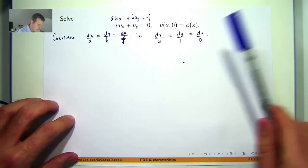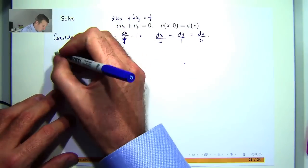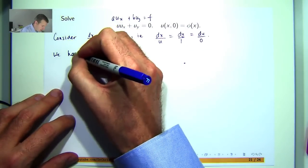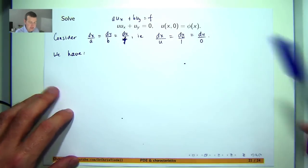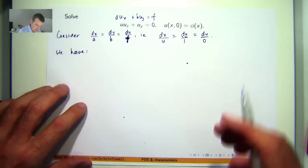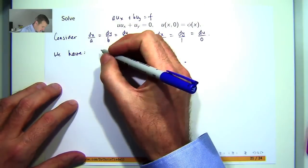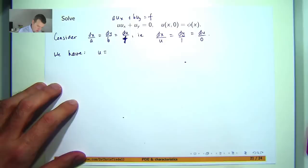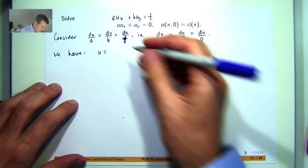So from this part over here we can immediately conclude that u is just a constant, because think of this as du dt equals 0. So let's call the constant say c1.